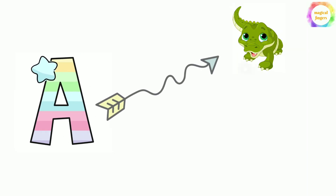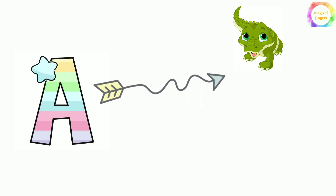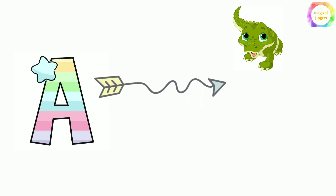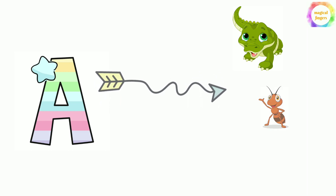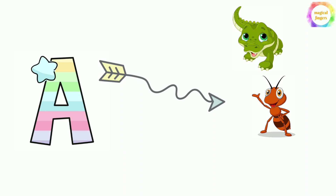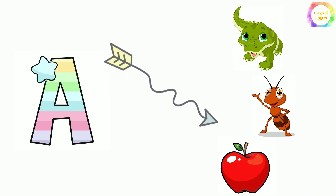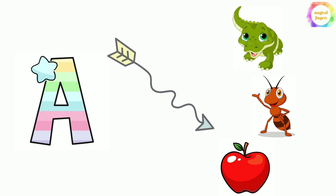A is for alligator. A is for ant. Do you know some other word with A? A is for apple. Right, let's learn the spellings of the same.